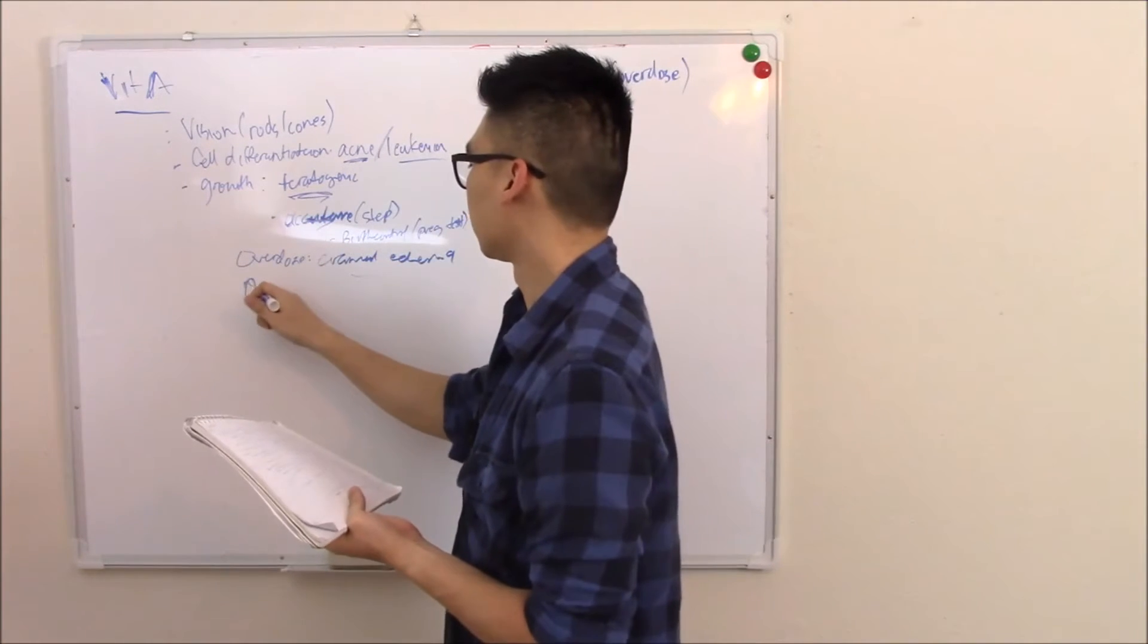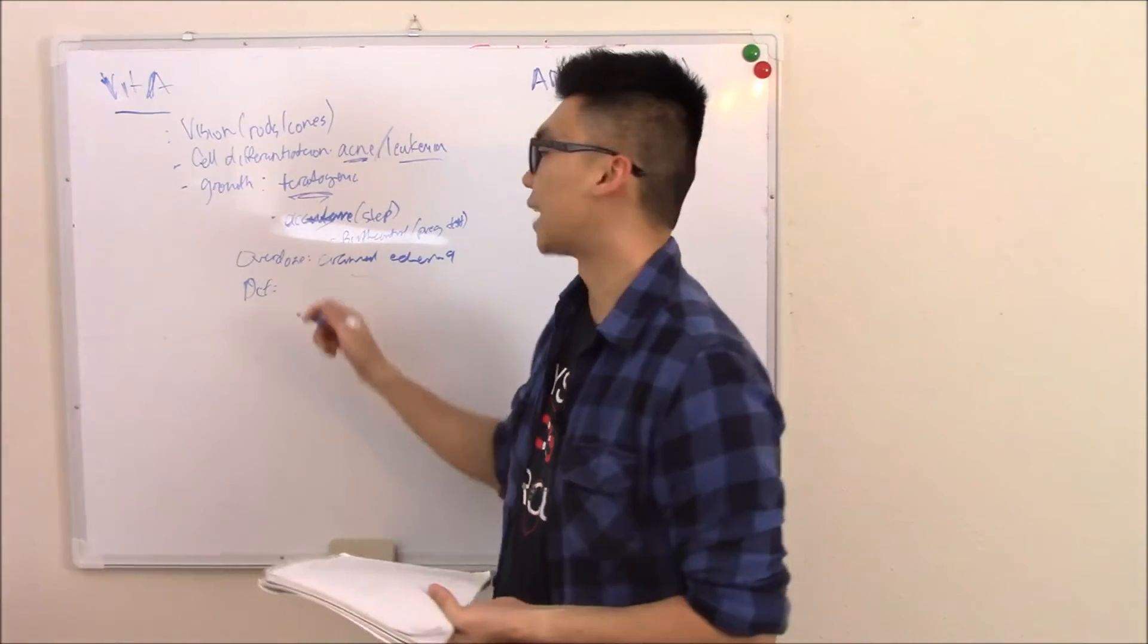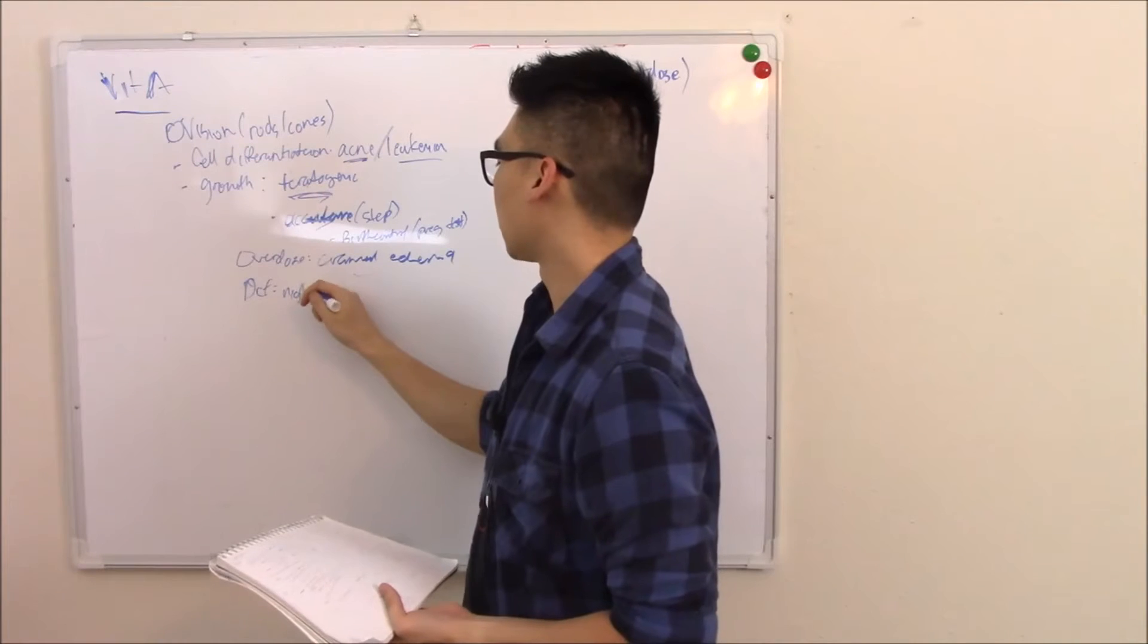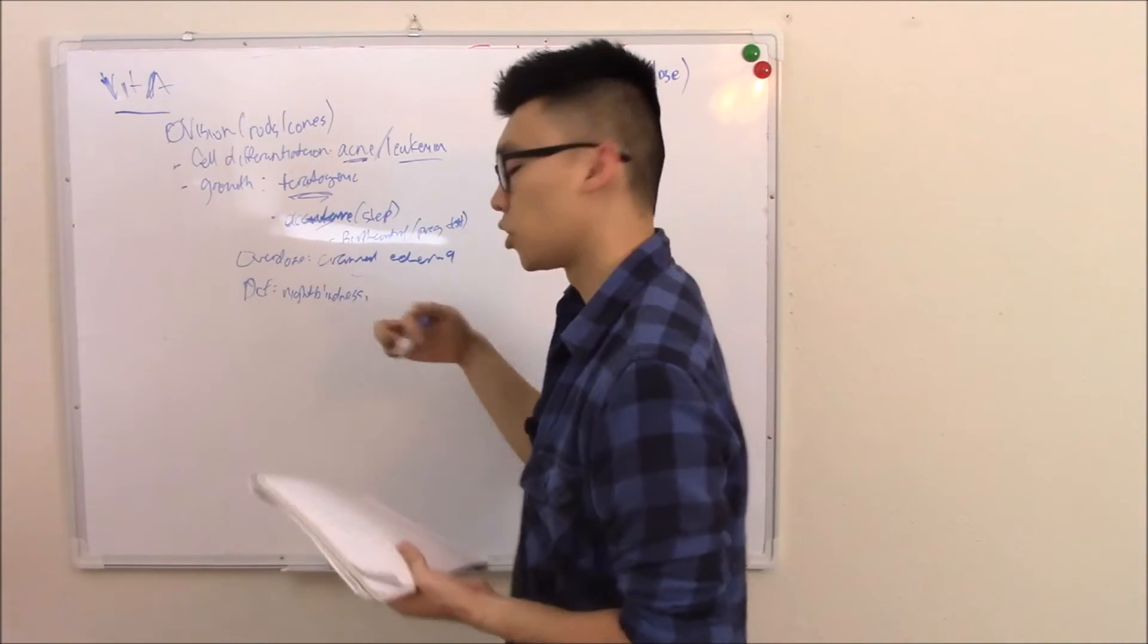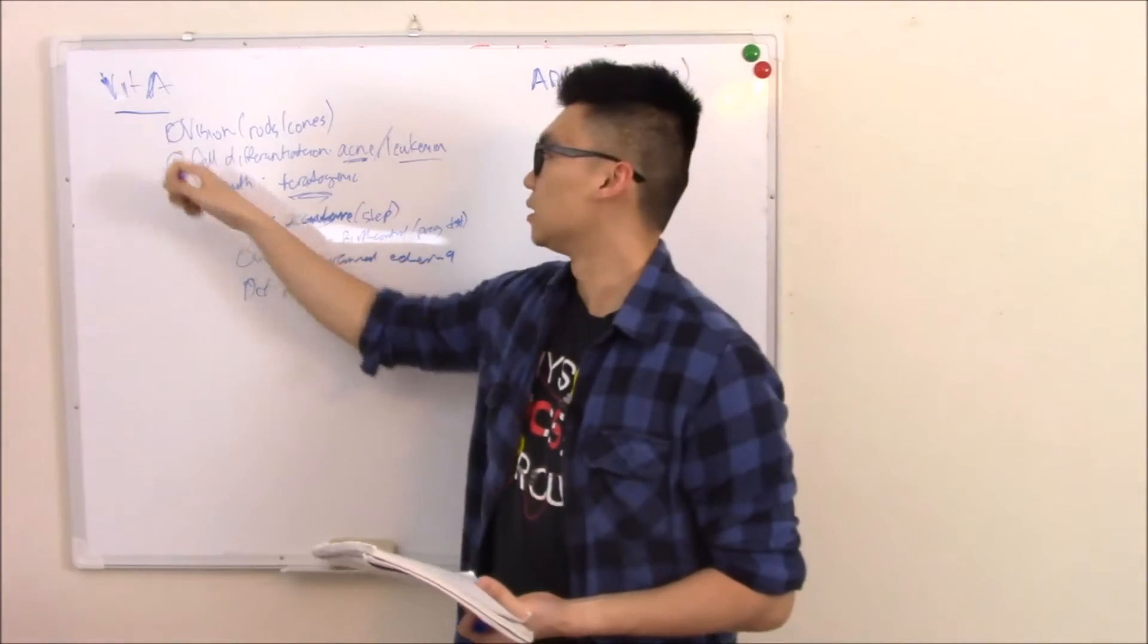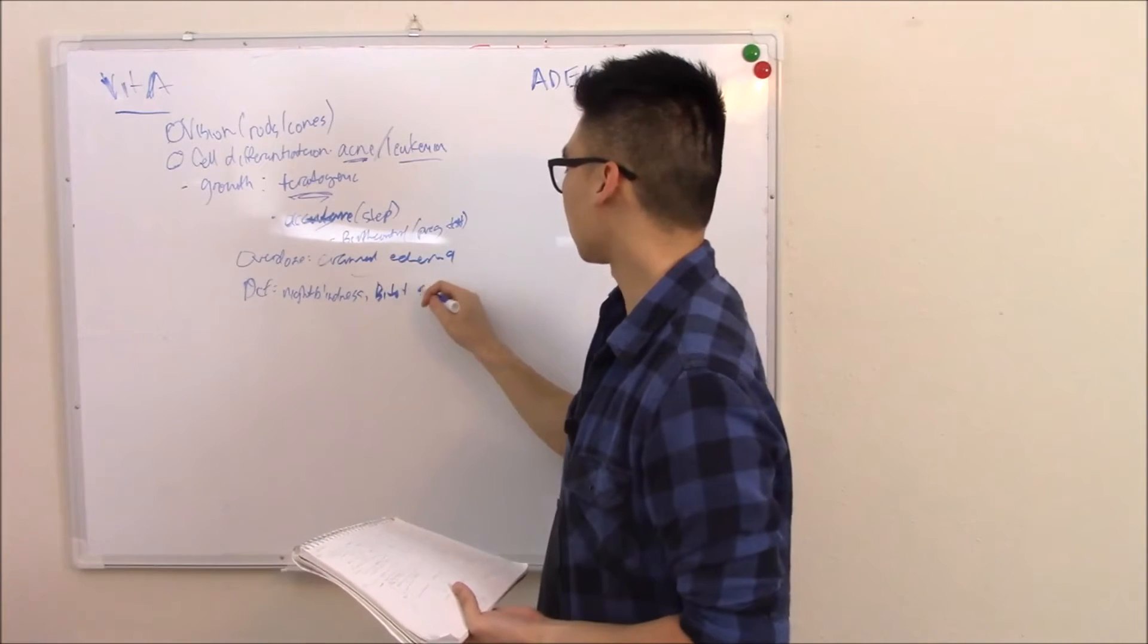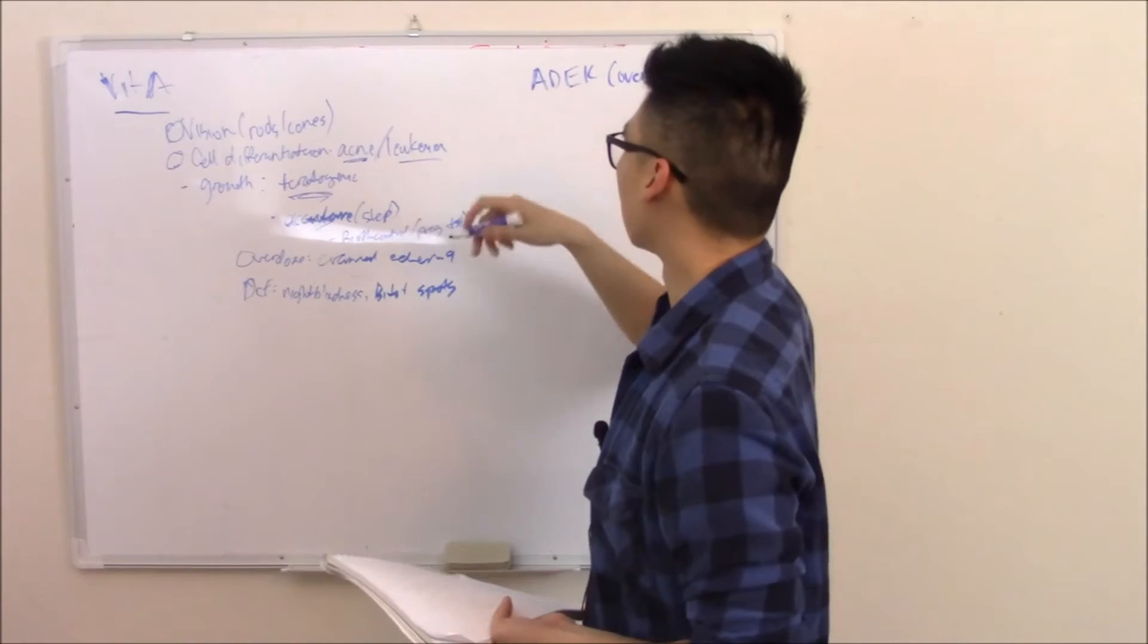Deficiencies, very common in the developing world. Night blindness because again, it's needed for vision. You have these abnormal keratin in your eyes because again, it's needed for cell differentiation. Those are called Bitot spots. So that's vitamin A.